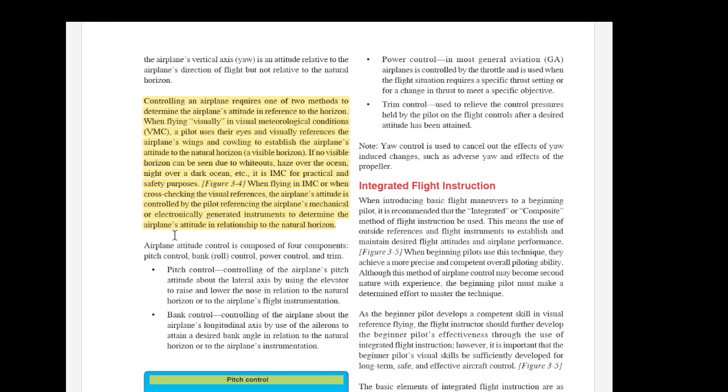Controlling an airplane requires one of two methods to determine the airplane's attitude in reference to the horizon. When flying visually in visual meteorological conditions, VMC, a pilot uses their eyes and visually references the airplane's wings and cowling to establish the airplane's attitude to the natural horizon, a visible horizon, the one that's outside the plane basically, the one that's going to be in front of you or to your left or to your right or even behind you. It's always going to be at that same eye level.